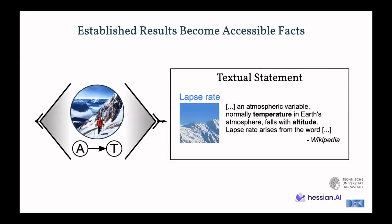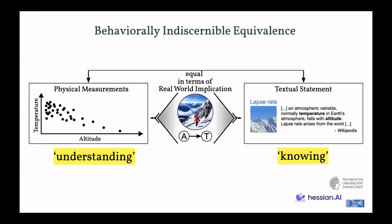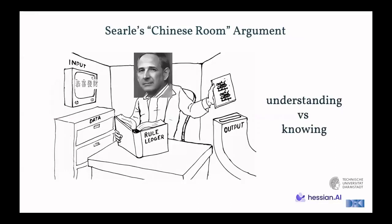However, after doing this, we usually have these established results becoming accessible. So we write them down, and we put them on platforms like, for example, Wikipedia. Here an article from Lapstrate, where we clearly have the same statement put into words. So the atmospheric variable, normally temperature in Earth's atmosphere, falls with altitude. And Wikipedia is certainly part of the data that these large language models are being trained on. Here you see, for example, OPT's dataset, the Pile, and Wikipedia comprises 1.53% of this whole dataset. In conclusion, on a behavioral level, it's indiscernible. So we have this equivalence between our physical measurements and our experiments, and the textual statements that we take as conclusions. But fundamentally, they seem to be of two opposing frameworks, of those of understanding and that of knowing.